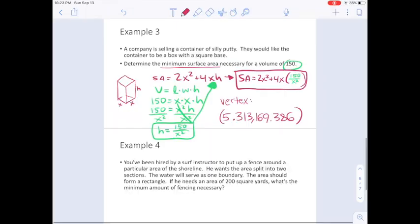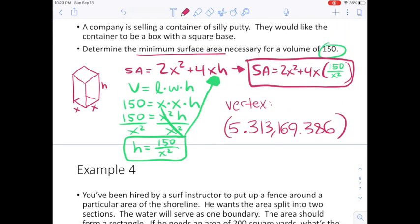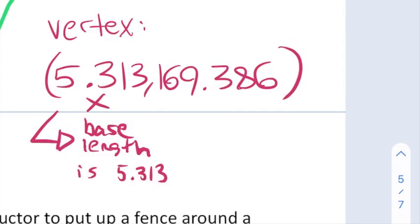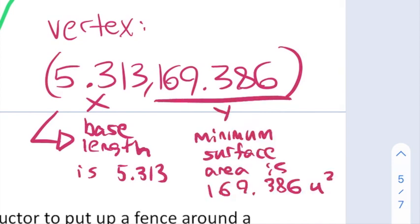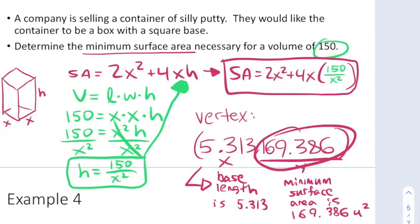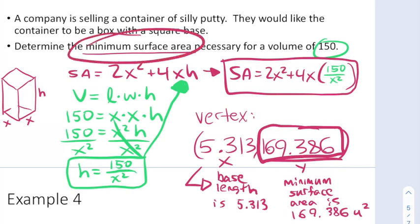Now as I look at the new graph, I can clearly see the vertex here at 5.313, 169.386. So I'm going to copy that over and we're going to consider what that means. This is our x value over here. This tells us that our base length should be 5.313. This y tells us that the minimum surface area, because y was the surface area in this equation, should be 169.386 units squared. This answers our question of what the minimum surface area was, which was our original goal for this problem.